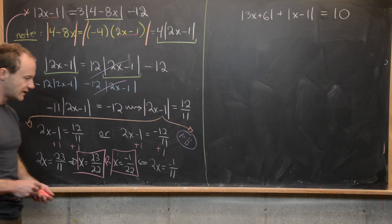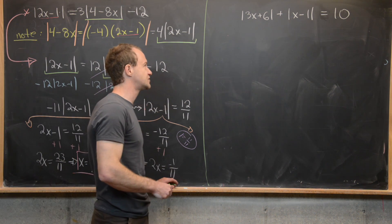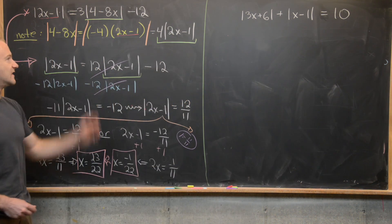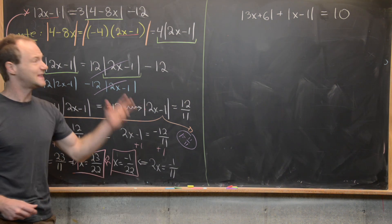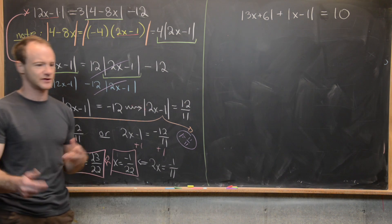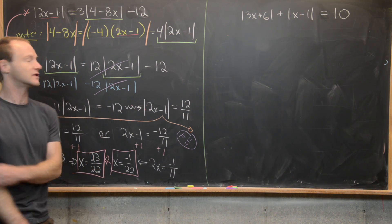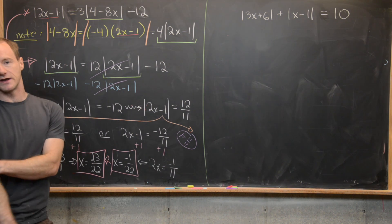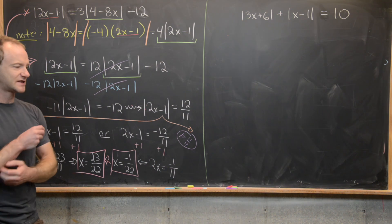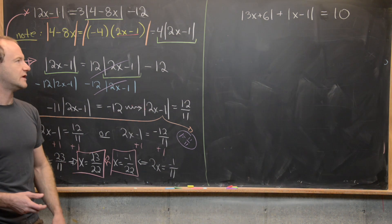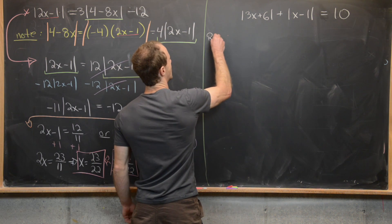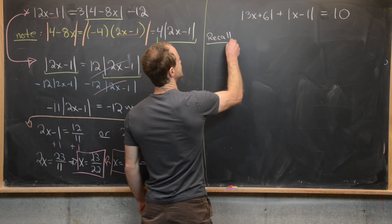Now let's move on to the next one. Notice we've got two types of objects in absolute values again, except these objects don't look the same and don't have some common factor you can take out of one of them to make them look the same. So we'll need to jump back to the definition of the absolute value in order to work this out.